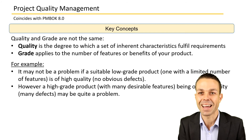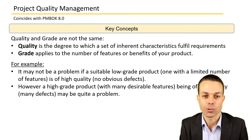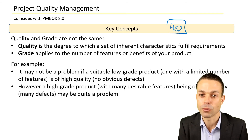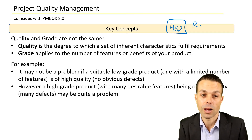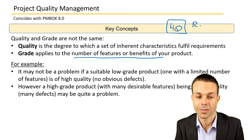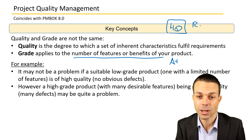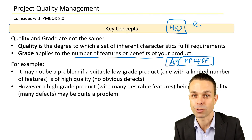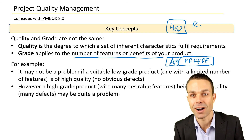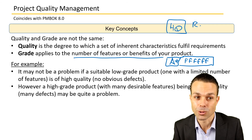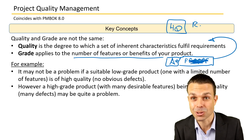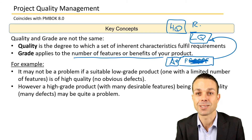Key concepts you'll see are quality and grade. Quality is the degree to which a set of inherent characteristics fulfills requirements — if it's high quality, it meets the requirements. Grade applies to the number of features or benefits of the product itself. Think of it like a school grade: an A-plus grade would be lots of features — think of your iPhone, for example. But making sure those features do what you want them to do, that's where quality comes in. If only one feature did what you wanted and the others didn't, it would be low quality.